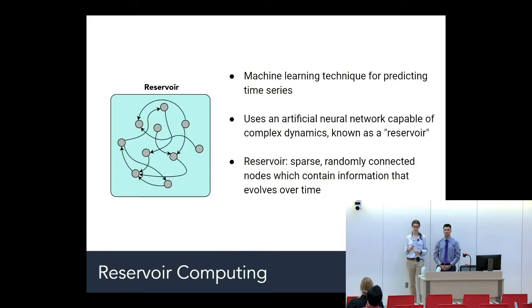Reservoir computing is the name of the machine learning technique we're using and it's for predicting time series, data that changes over time. It uses an artificial neural network capable of complex dynamics which we call a reservoir, made up of sparse randomly connected nodes. The nodes contain information that evolves over time and learns the dynamics of the system.